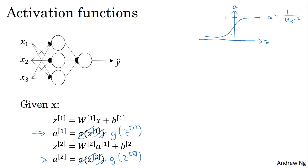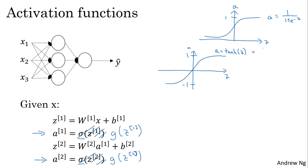The sigmoid function goes between 0 and 1. An activation function that almost always works better than the sigmoid function is the tanh function, or the hyperbolic tangent function. This is A equals tanh of Z, and this goes between plus 1 and minus 1. The formula for the tanh function is E to the Z minus E to the negative Z, over their sum. It's actually mathematically a shifted version of the sigmoid function, shifted so that it now crosses the 0,0 point and rescales, going between minus 1 and plus 1.